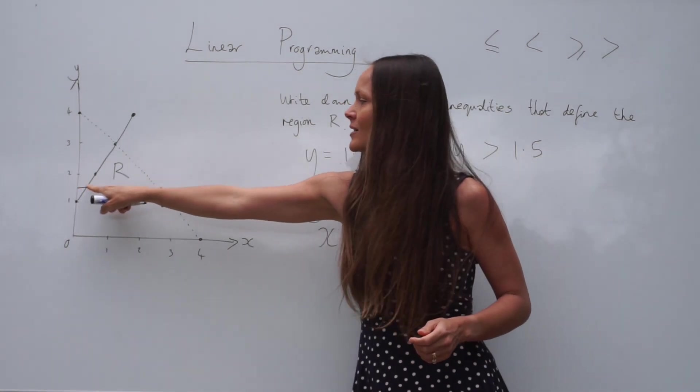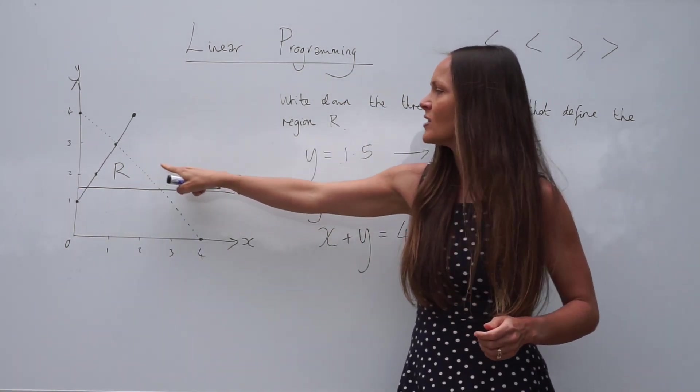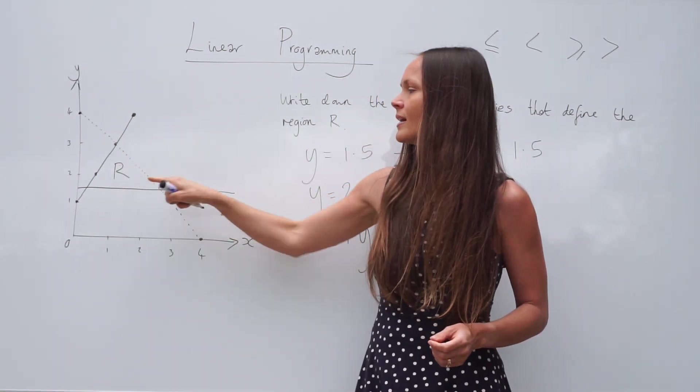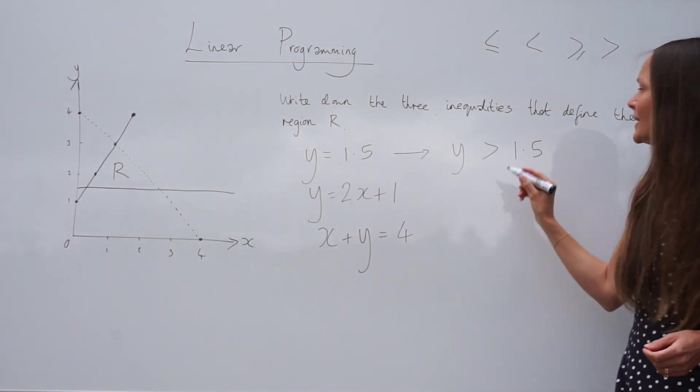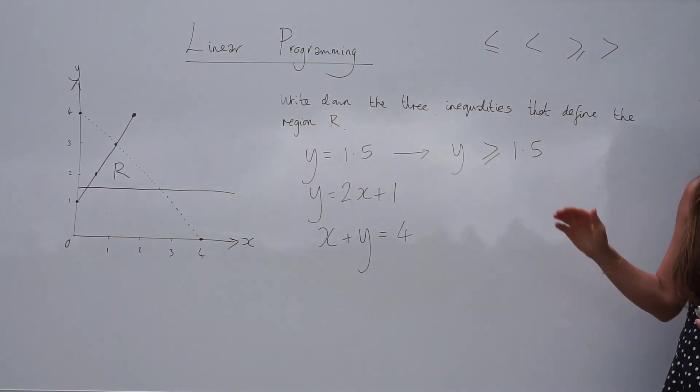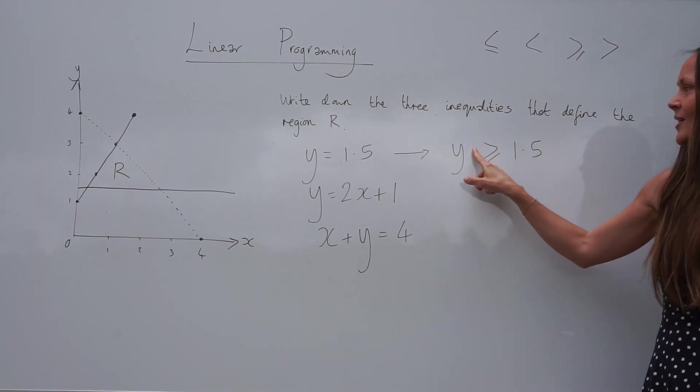So y is greater than 1.5. We need to add something else in with this inequality. Notice how this is a solid line. It's not dashed like this one. That means the region R could also lie on that solid line. So we need to add in the equal sign to the inequality. To show that the y values could be equal to 1.5 or greater than.